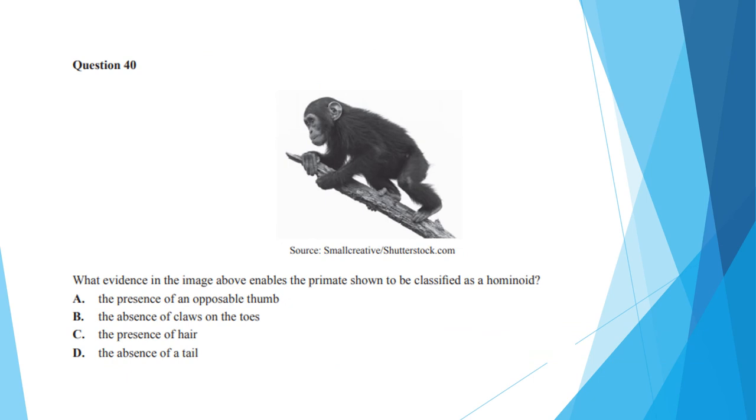Question 40, the last question gives you a diagram of a primate and asks you what evidence in that image enables you to classify that primate as a hominoid. Now this one is tricky and that's reflected in the cohort breakdown for this question. Most people had actually picked A, the presence of an opposable thumb over the correct answer, which is D, the absence of a tail. The reason why opposable thumb is incorrect is because monkeys, who also can have opposable thumbs, are classically distinct from hominoids. And one of the differences between the two is that hominoids do not have a tail, whereas the presence of an opposable thumb is not exclusive to hominoids. So that's why option A is wrong.